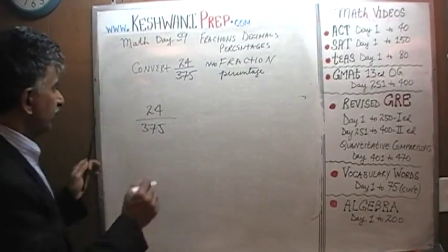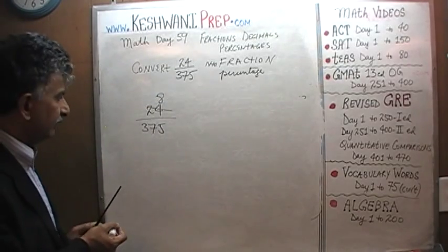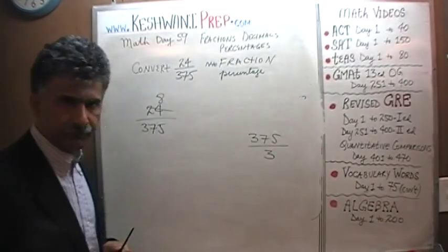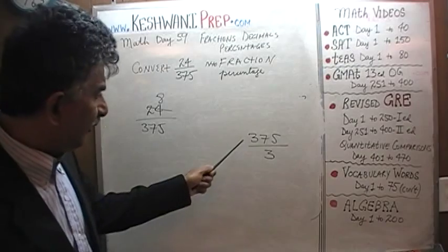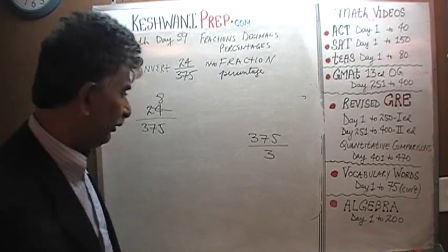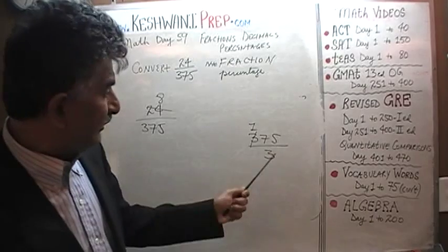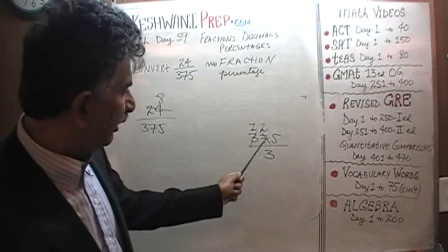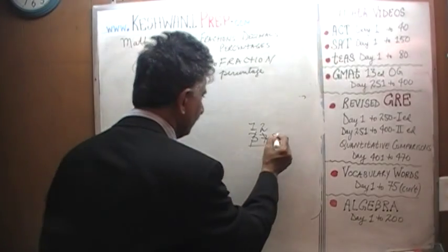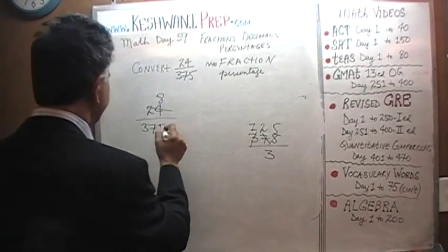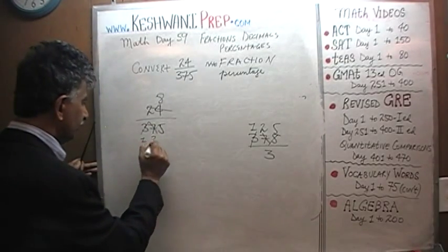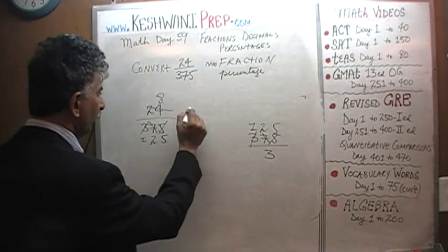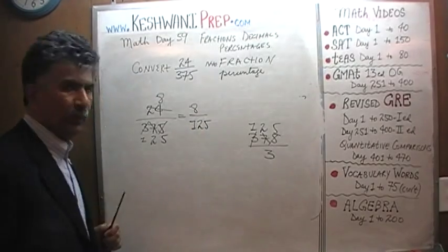24 ÷ 3 = 8. For 375 ÷ 3: 3 has one 3; 7 has two 3s, the remaining 1 joins the 5 to make 15; 15 has five 3s. So 375 ÷ 3 = 125. We end up with 8 over 125.